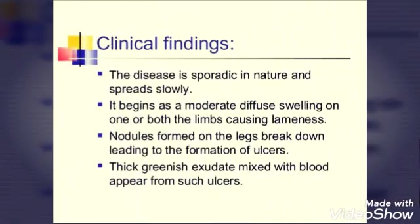The clinical findings are that the disease is sporadic in nature and spreads slowly. It begins as a moderate diffuse swelling on one or both the limbs causing lameness. Slowly and gradually it gets diffused into the body part, into the skin layer, and slowly starts growing and causes swelling and ulceration.